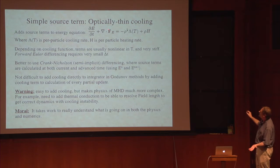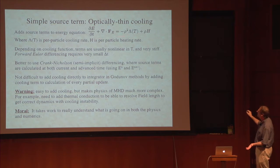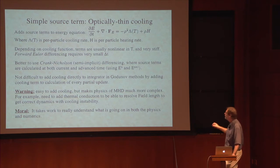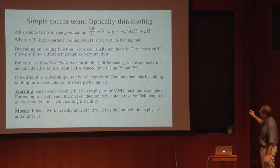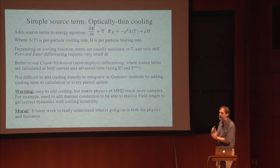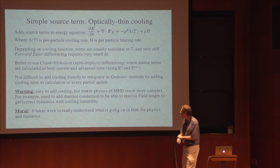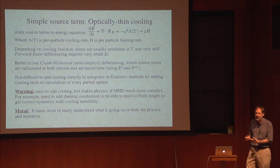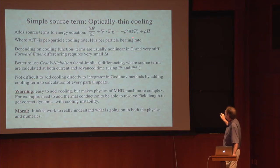Here's an energy equation written with a radiation interaction term on the right-hand side — a cooling term where lambda is some per-particle cooling rate for the ISM and H is some per-particle heating rate due to stellar photons. I discuss implicit differencing here because while this is straightforward to implement numerically, it changes the physics very substantially in a way that back-reacts on the numerics. If you just simply add this term without really understanding what it does, it can get you into trouble.